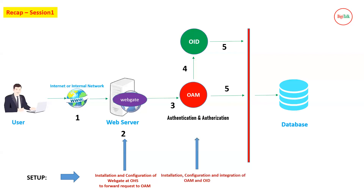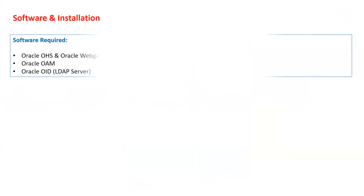WebGate is an OAM component but it is separate software that needs to be installed alongside OHS. Once that is done, you install and configure OAM and OID, and then integrate OAM with OID — because all identities are stored in OID. OAM works as an SSO (Single Sign-On) and as a policy manager for application authorizations.